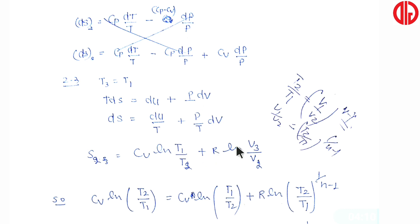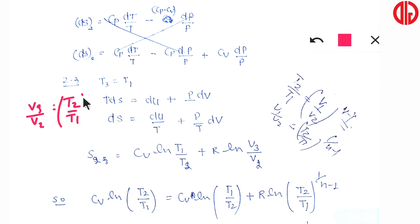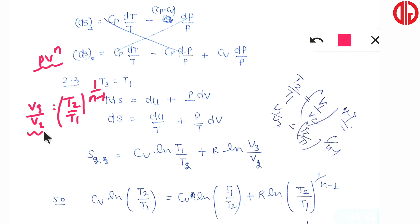From this relation we can replace V3/V2. That is: V3/V2 = (T2/T1)^(1/(n−1)). This can also be written in the form T2/T1 = (V1/V2)^(n−1). Now we write the entropy change from 2 to 3: ΔS₂₃ = cv·ln(T3/T2) + R·ln(V3/V2). Substituting T3 = T1 and replacing V3/V2 with (T2/T1)^(1/(n−1)).